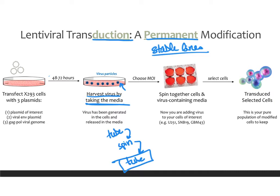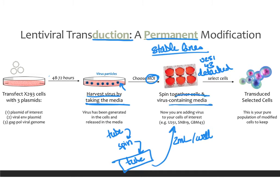Once you have your tube of virus, you need to decide how much virus to add — that's what the MOI is, which we'll cover in a moment. Take the cells you actually want to infect, such as U251s or other cell lines, and add them to a plate freshly after trypsinization while they're still detached. Add 2 ml per well of your virus-containing media on top of them, then spin in a centrifuge for two hours. This increases contact between your virus and cells. After centrifugation, let the cells sit for 48 to 72 hours.